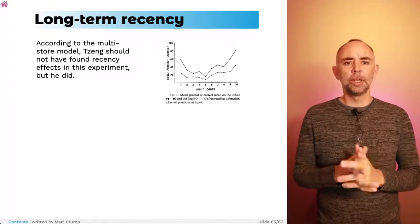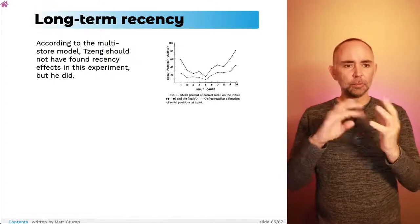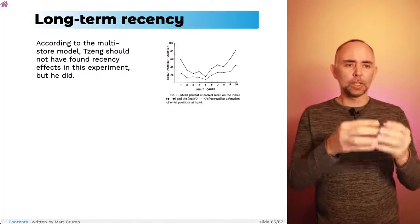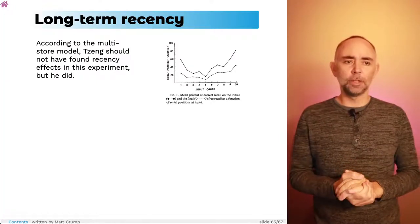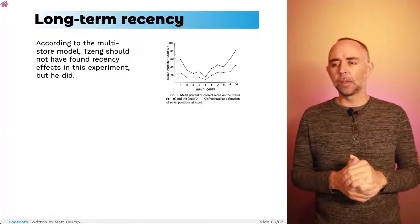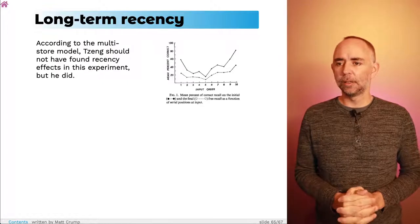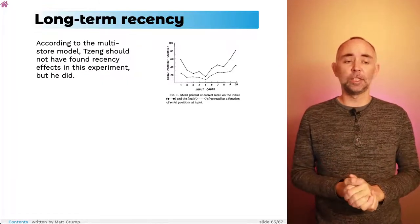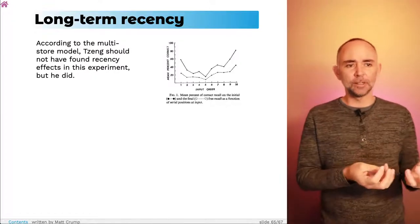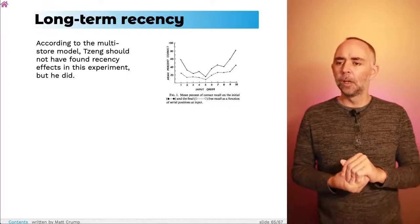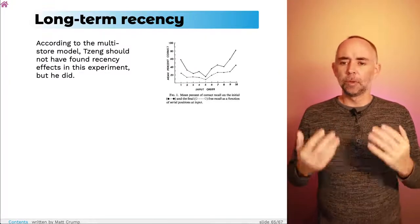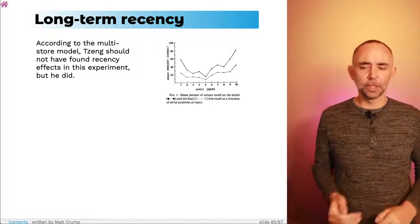This is an example where we have a model-based idea about how something works, some data that support the model, and some data that are confusing from the perspective of the model. If we were to follow this line of research since the 1960s, we would see various proposals being put forward to modify the original model to account for these kinds of outlying data points.